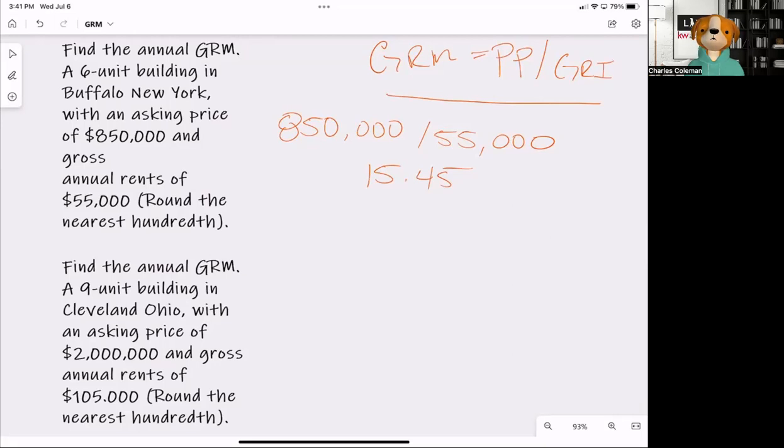So the exact same thing - we're going to take the property price, the purchase price, and divide it by the gross rental income. This is the income before any expenses: property taxes, insurance, utilities. So we take the $2,000,000 and divide it by $105,000. This gives us a gross rent multiplier of 19.05.